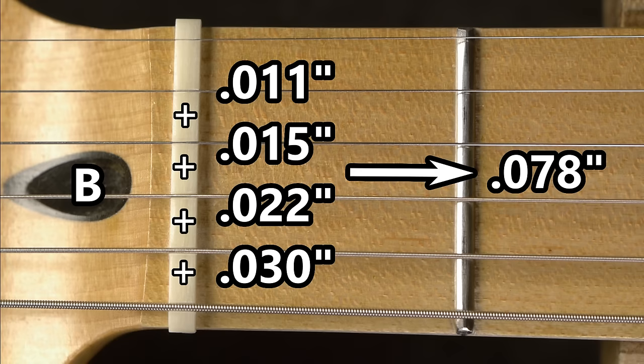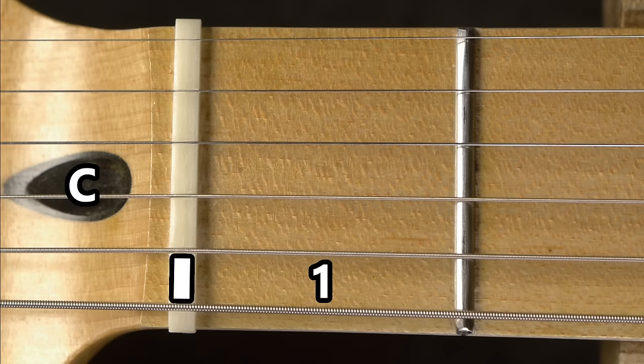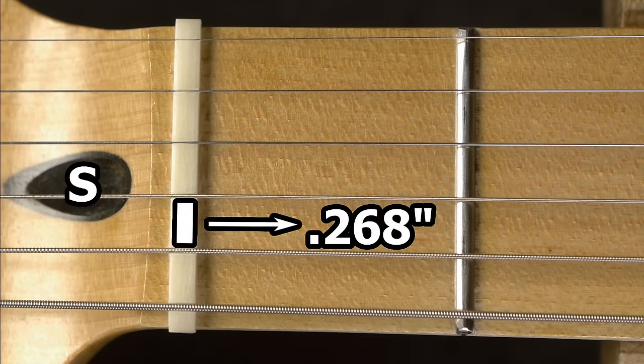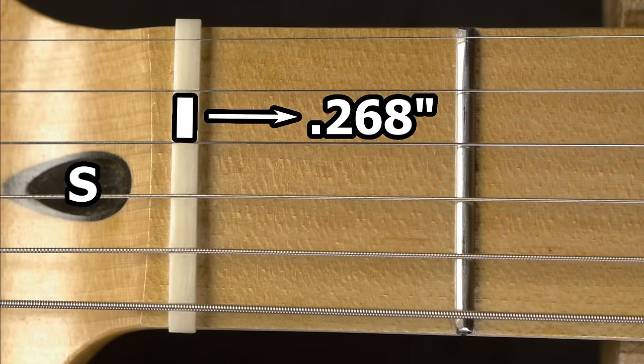To find C, count the number of spaces between the strings. On a six-string guitar, there are five spaces. On a four-string bass, there are three spaces, and so on.